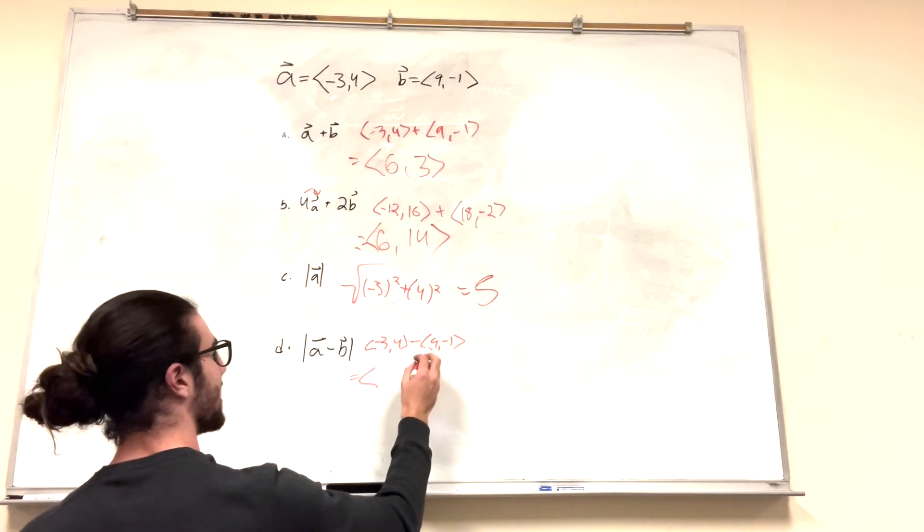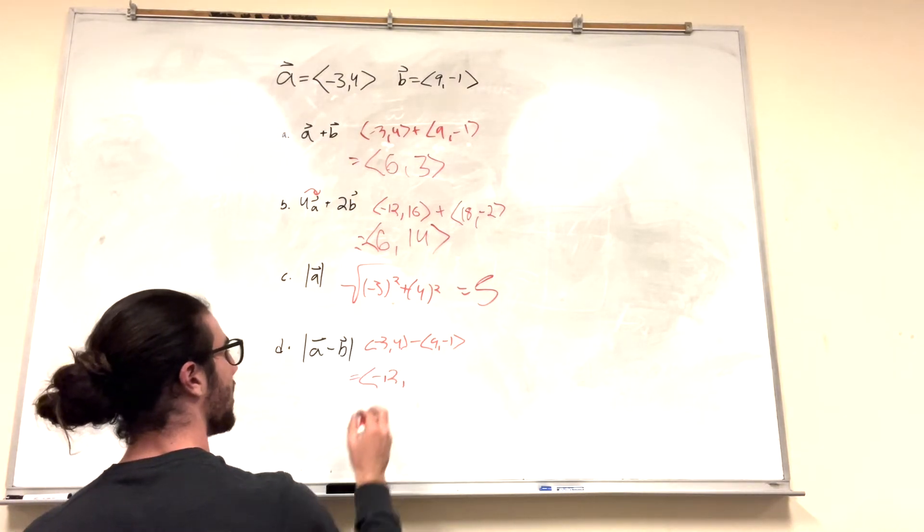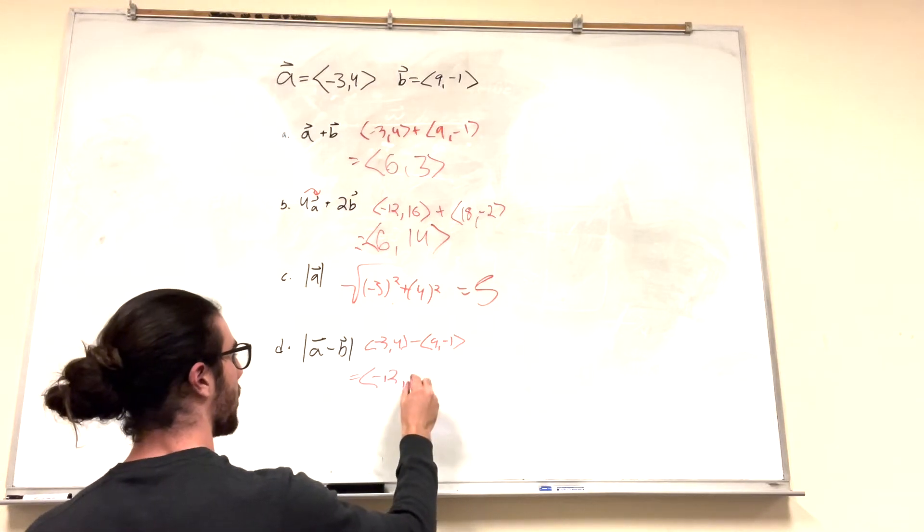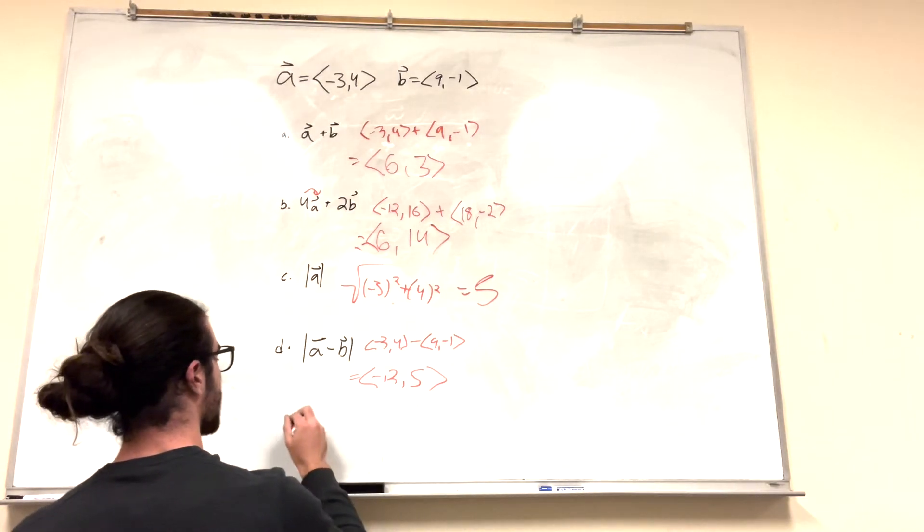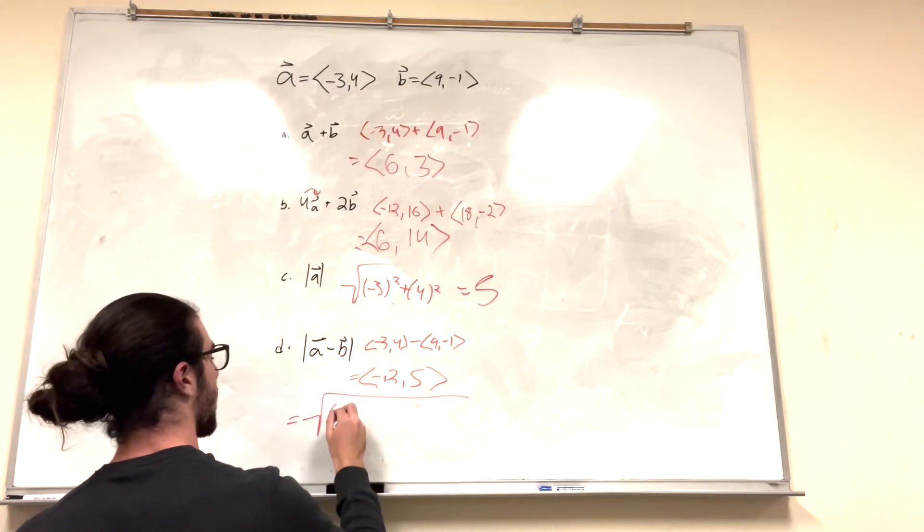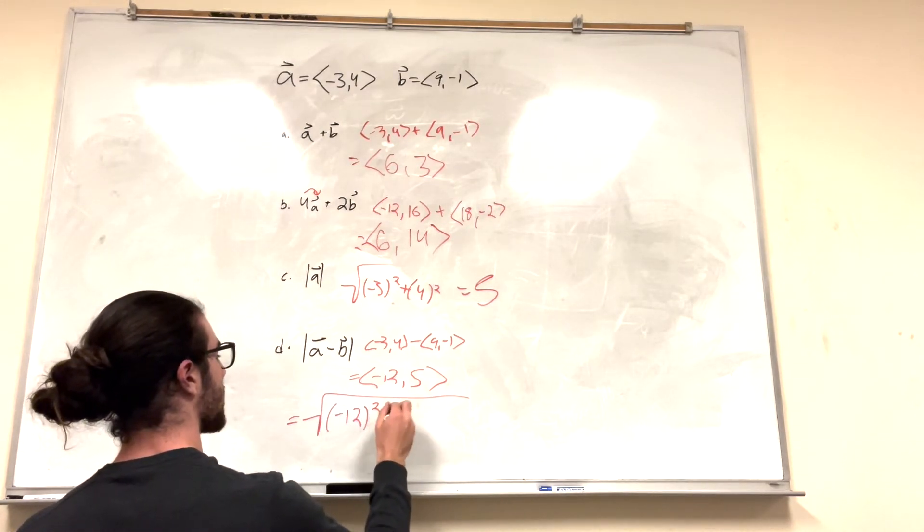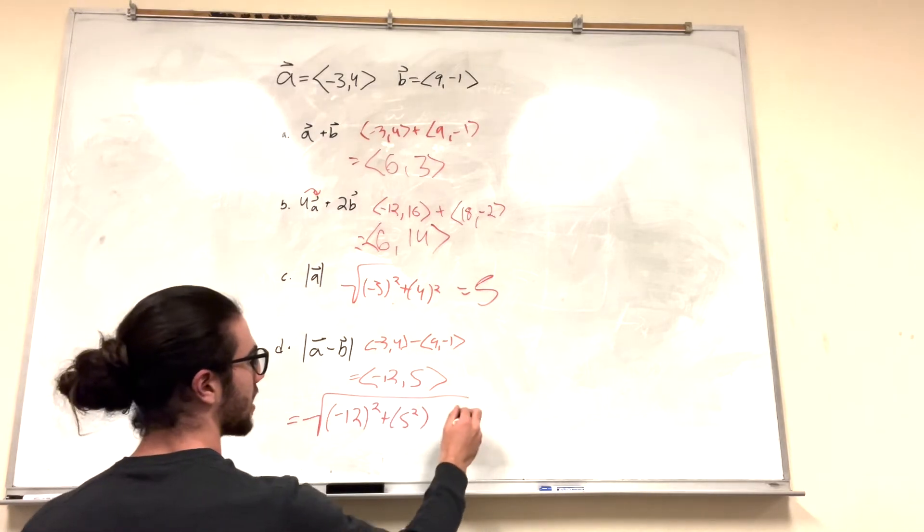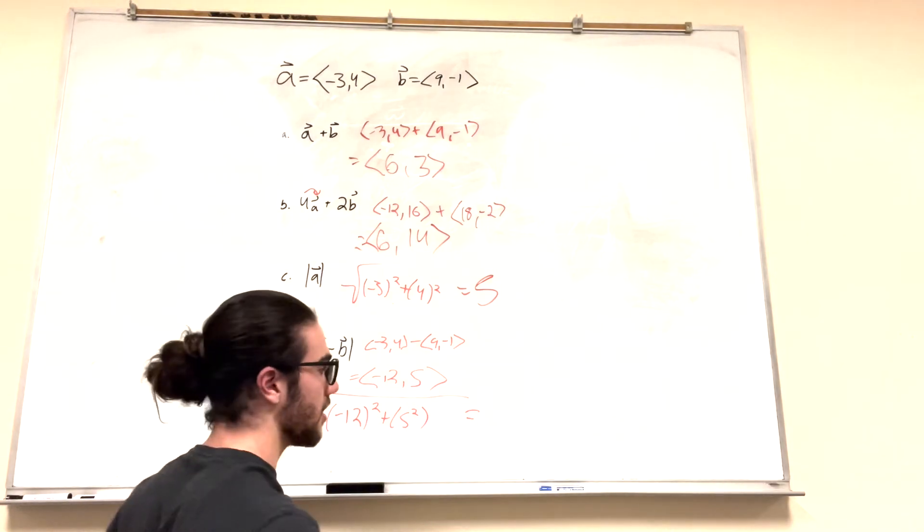So negative 3 minus 9, negative 12, right? 4 minus negative 1 is 5. So if we take the square root of negative 12 squared plus 5 squared, it's going to give us 169, which is the square root of 13.